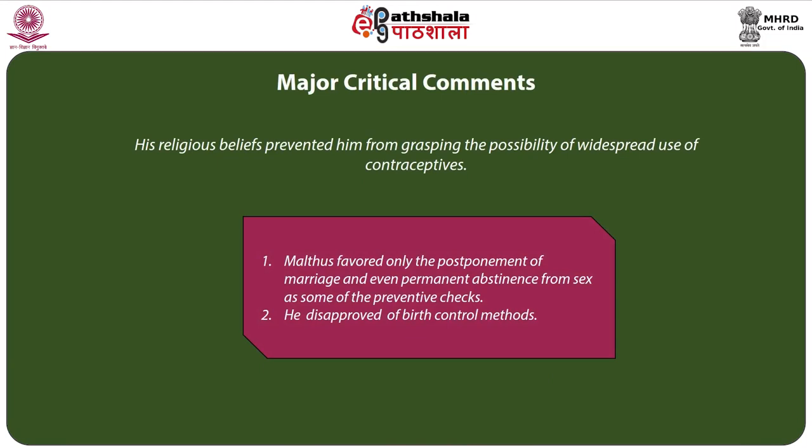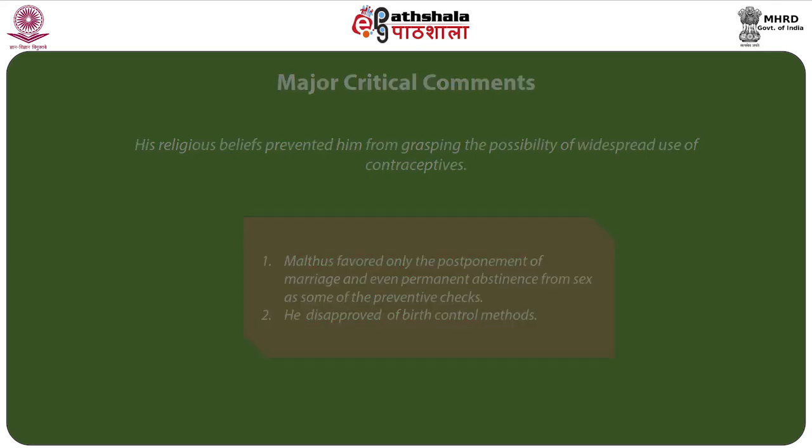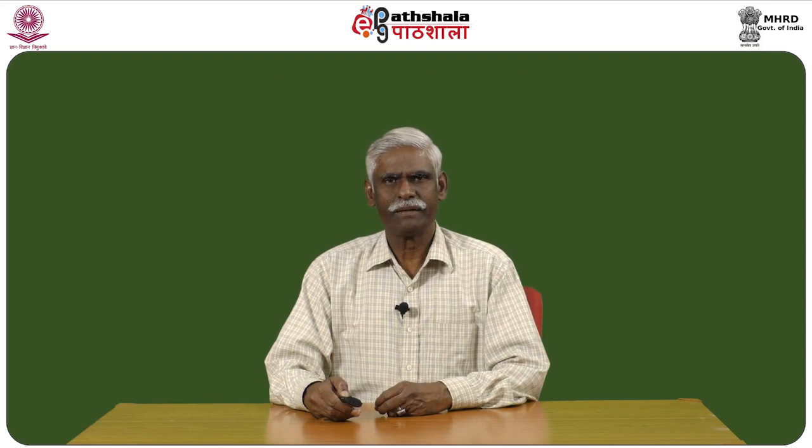Malthus favored only the postponement of marriage and even permanent abstinence from sex as preventive checks, as he never expected that the use of contraceptives would make a tremendous effect in controlling population. Modern ways of living influenced people so that the number of children is greatly restricted by couples using various methods of contraceptives. The credit goes to contraceptive technology, which subsequently brought an important change in family size, and through family planning measures has significantly brought down population growth in most countries of the world.